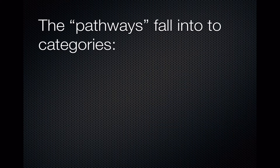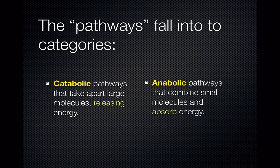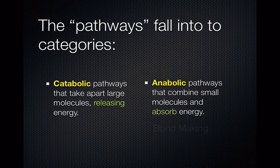There are basically two categories of metabolism. There are catabolic pathways, which is the side of metabolism involved in the taking apart or breaking of bonds to release energy. Anabolic pathways are pathways that do just the opposite — they take in energy and use that energy to build bonds by combining small molecules, for example monomers, into larger molecules, for example polymers. So catabolic pathways are the energy releasing and bond breaking side, while anabolic pathways are the bond making and energy absorbing side of metabolism.